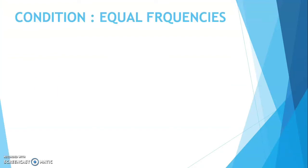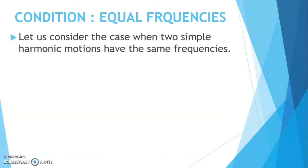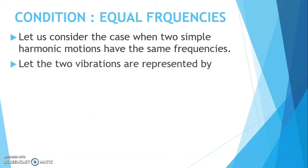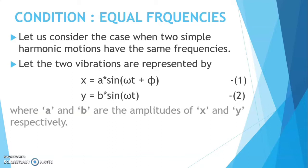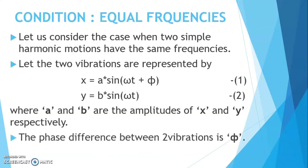Here we have the condition of equal frequencies. Let us consider the case when two simple harmonic motions have the same frequency, one acting along the x-axis and the other one along the y-axis. Let the two vibrations be represented by x equals to A sin(ωt + φ) — let this be our first equation — and y equals to B sin(ωt) — let this be our second equation — where A and B are the amplitudes of x and y respectively. The x-motion is ahead of y-motion by angle φ, and the phase difference between the two vibrations is φ.